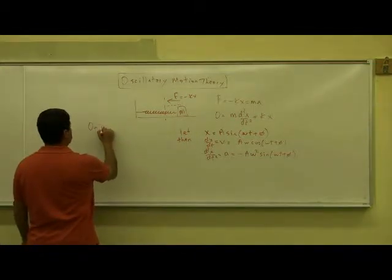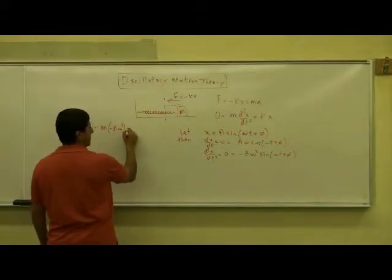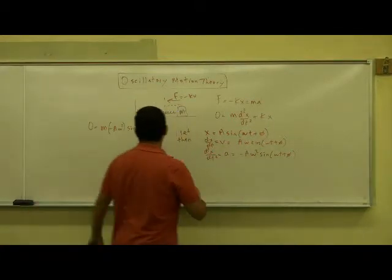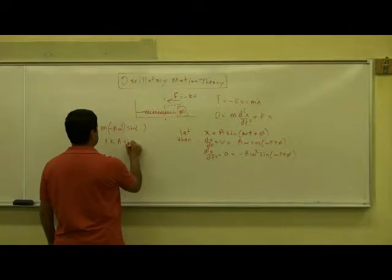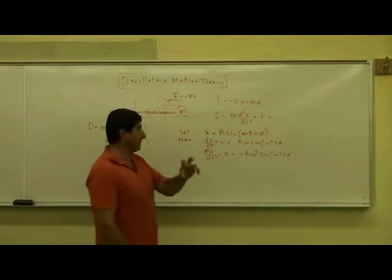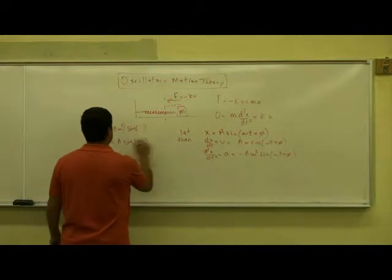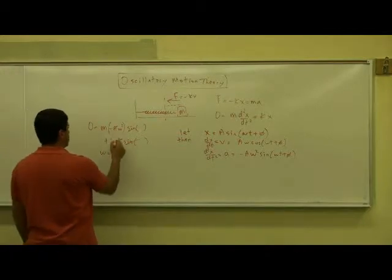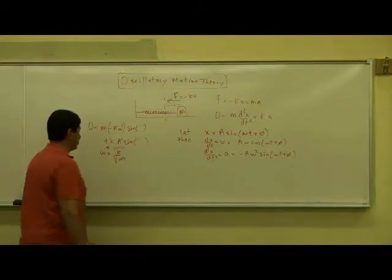Substituting in, we get zero equals m times the second derivative, which is negative A·ω²·sine(ωt + φ), plus the spring constant k times x, which is A·sine(ωt + φ). For this to equal zero for all values of t, we cancel the sine and A, giving ω² = k/m, and therefore ω = √(k/m).